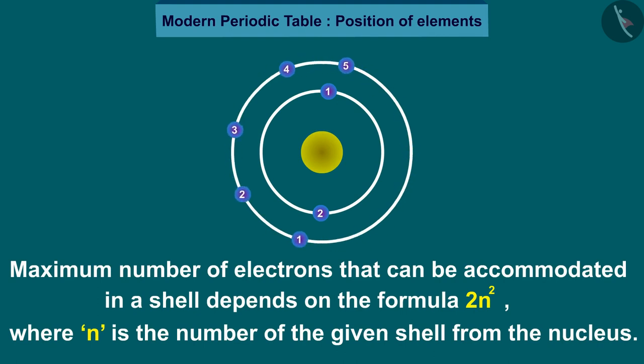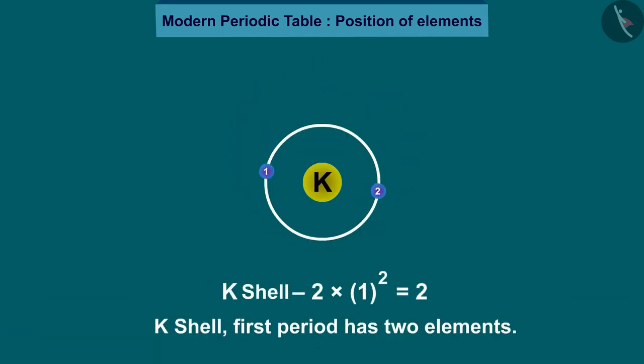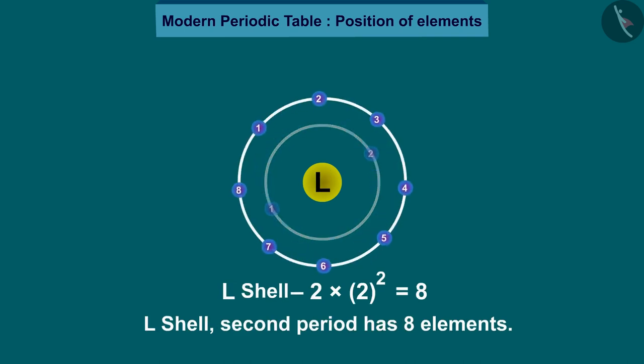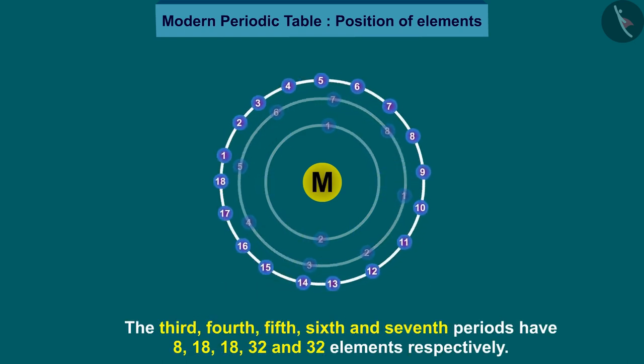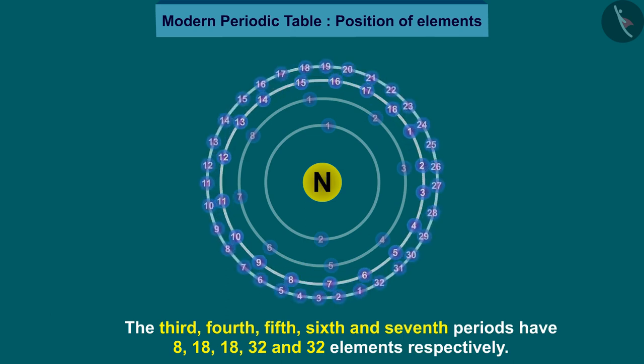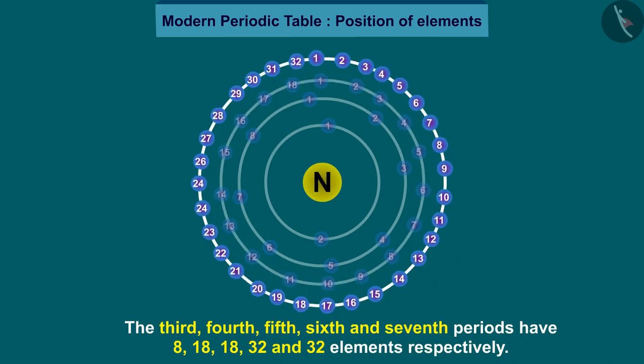For example, K shell: the first period has two elements. L shell: the second period has eight elements. The third, fourth, fifth, sixth, and seventh periods have 8, 18, 18, 32, and 32 elements respectively. The reason for this you will study in higher classes.